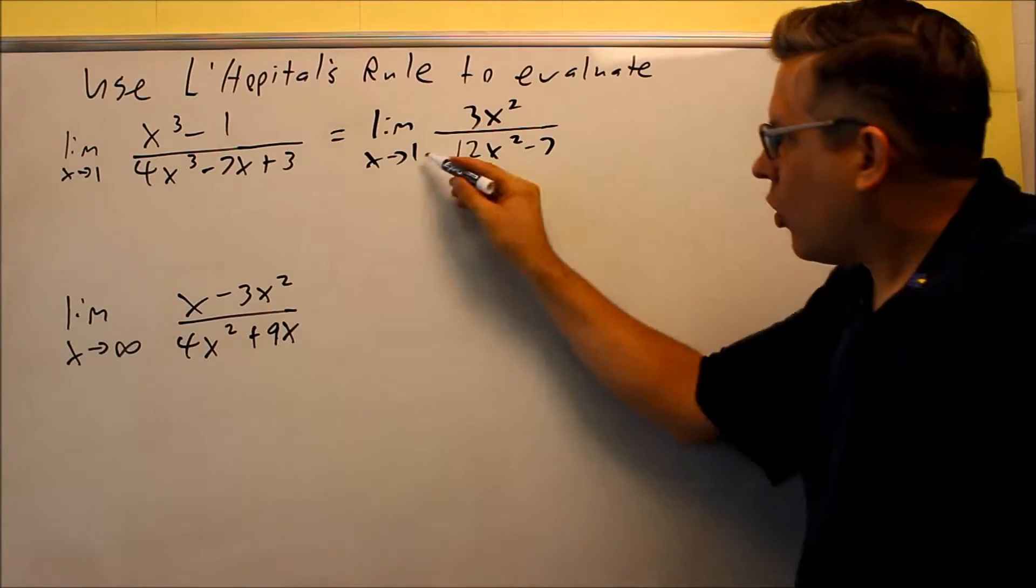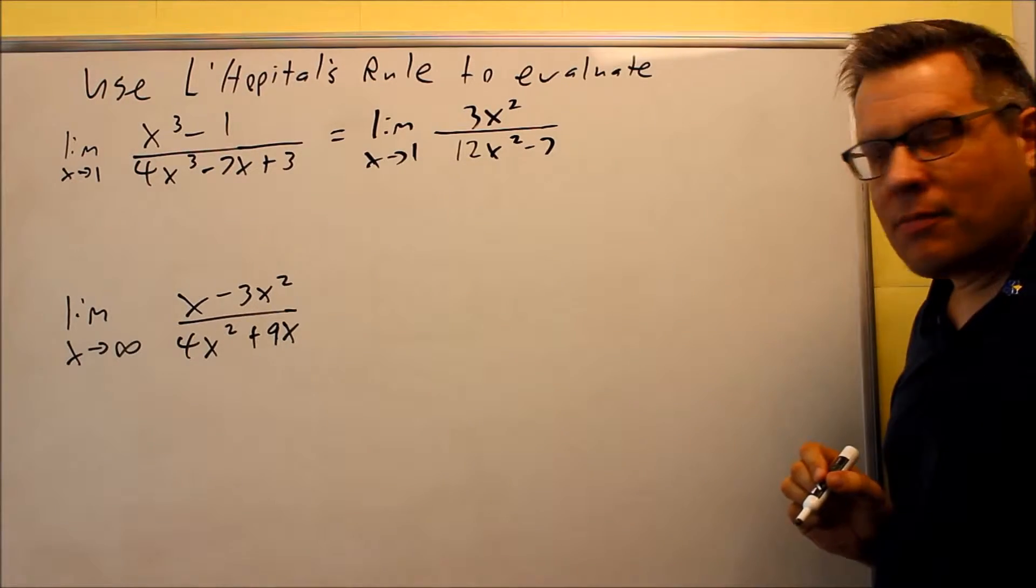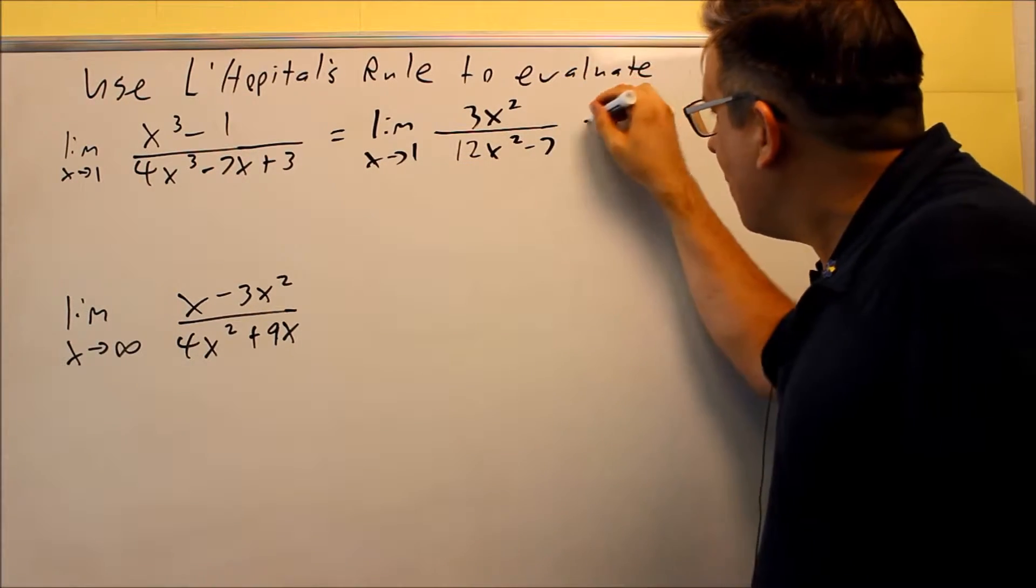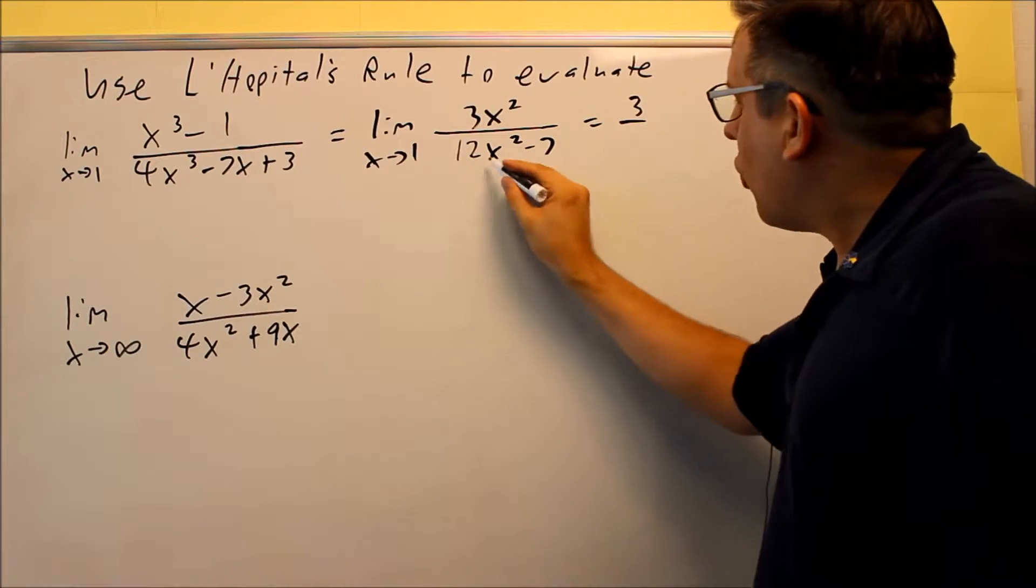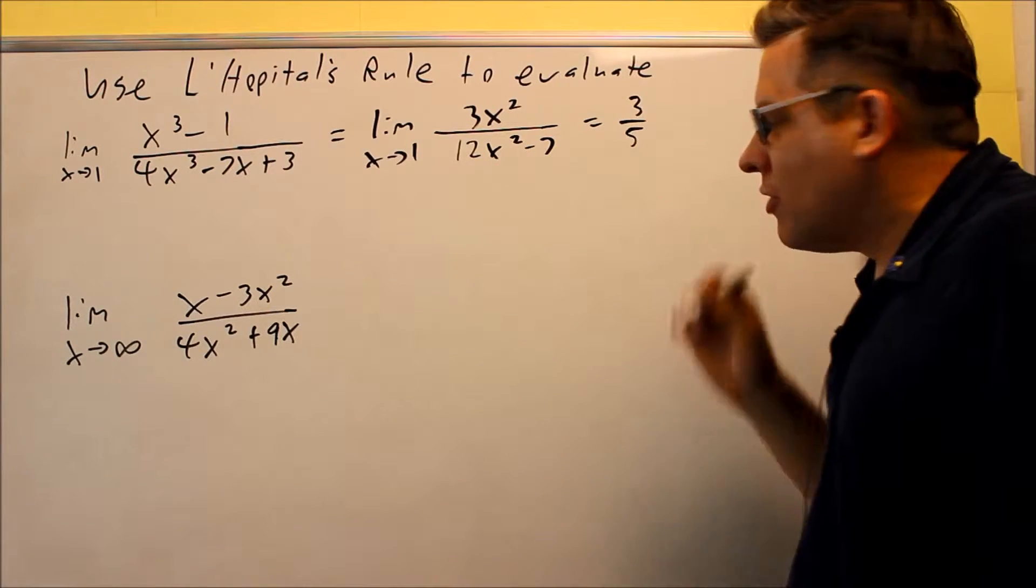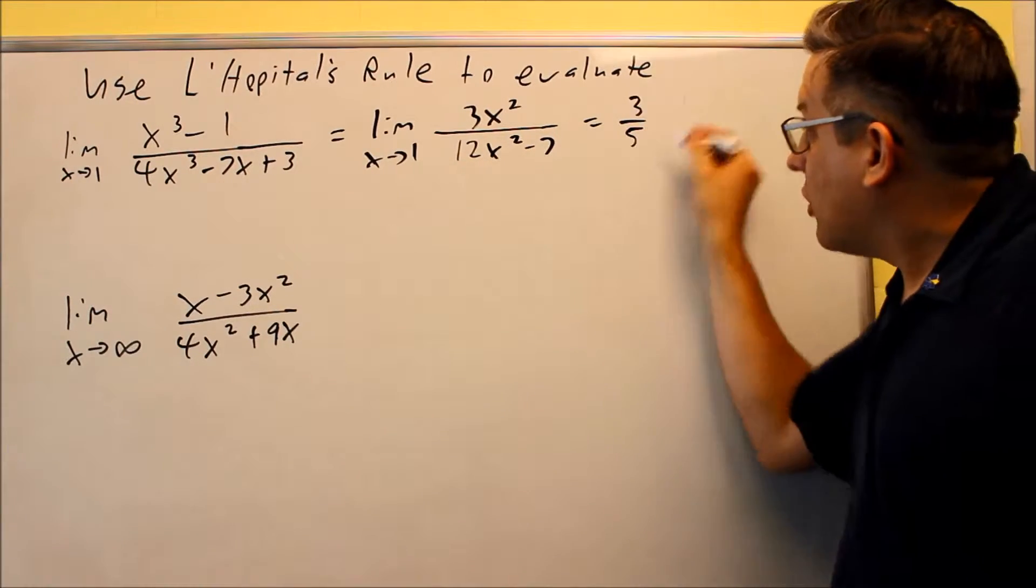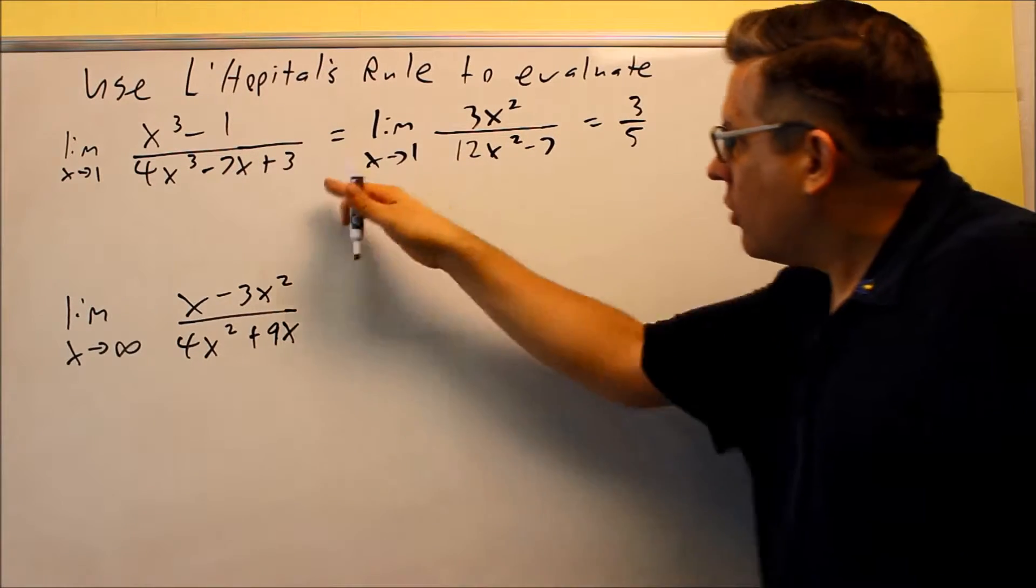Now this time we're going to put a one in there, we want to make sure we don't get a zero over zero again. If you put one in the top you get three, if you put a one in down below you get a five. So therefore we know that we don't have to take any more derivatives because we actually got our final answer, we only had to do the derivative once.